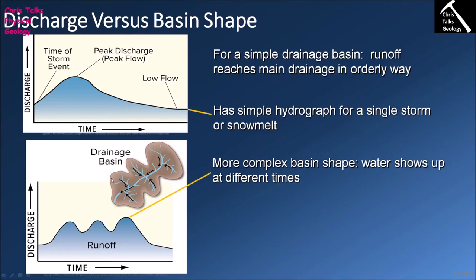If a river has a more complex drainage basin, it can lead to a lot of variation in the hydrograph because the water doesn't all arrive at one time — in some cases it arrives in several bursts. We'll see this as repeated peak discharges, because water is entering the river through three separate portions of the drainage basin, producing a peak from each area. The more complex your drainage basin, the more complex your hydrographs will be.